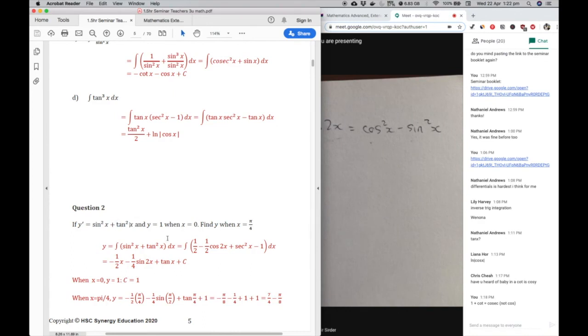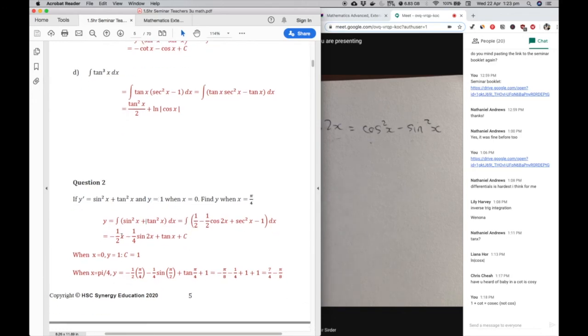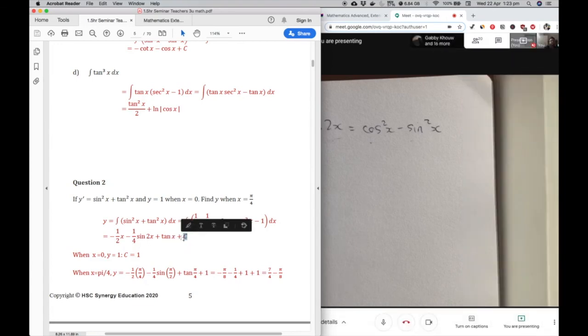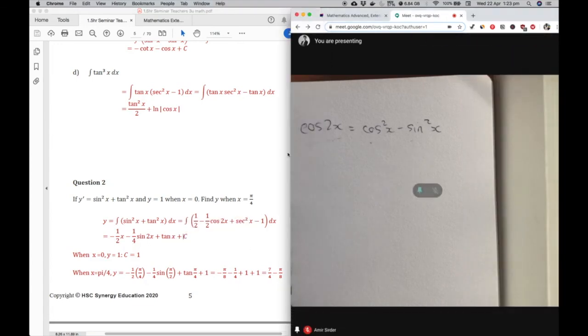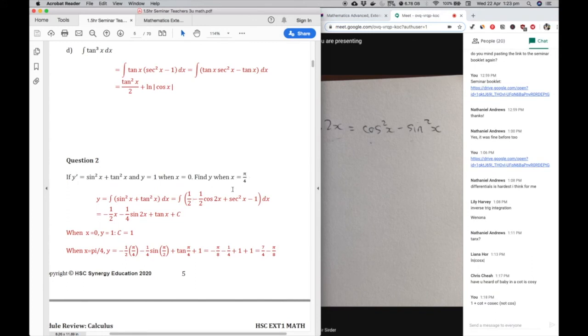And tan squared and the integral of tan squared, we have to convert to sec squared. So we just do that, we end up with this as our y. We have a plus c and we use the initial conditions to figure out what that c is. So when x is 0, y is 1, so you sub in x equals 0, that disappears, that disappears. Tan 0 also disappears, all of this disappears. y equals 1, that means c must be 1. And then we can just sub in pi over 4 into y, once you've done that. And type that in your calculator, and you should get that answer.